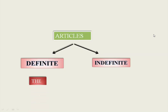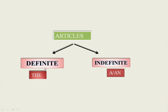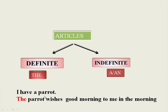We know very well that there are two kinds of articles: the definite article and the indefinite article. 'The' is the definite article. 'A' or 'An' is the indefinite article. Let us go through an example to have an idea of what the indefinite article is and what the definite article is.